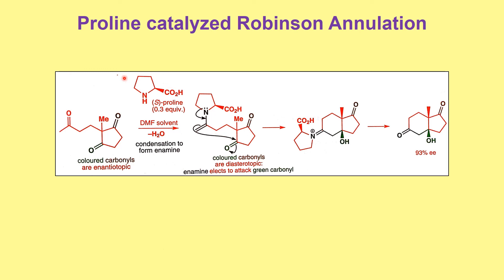Let's look at the last example — the Robinson annulation reaction. We have a product formed as a result of Michael addition. When you add proline in DMF as solvent, enamine formation takes place. Since the O-H is going to form from the same face — as established by the carboxyl group hydrogen interaction — you end up getting the desired stereochemistry. You get this product in 93% ee. All the examples covered are absolutely important from an exam point of view.